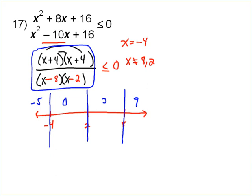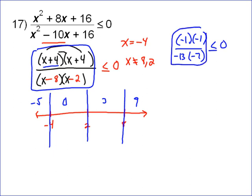So for instance, if I test negative 5, it's going to be negative 5 plus 4, which is negative 1. And then negative 5 minus 8 is negative 13, and negative 5 minus 2 is negative 7. If you notice, I don't need to determine what this is exactly, but all of these negatives multiply to make a positive number. A positive number is never going to be less than or equal to 0, so negative 5 does not work.